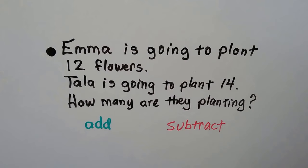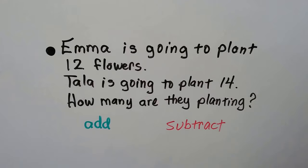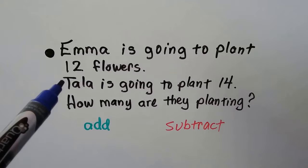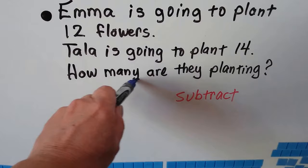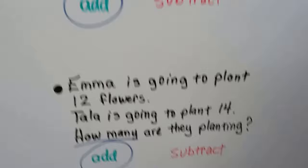Emma is going to plant 12 flowers. Tala is going to plant 14. How many are they planting? It's important to note: Emma is planting 12 and Tala is planting 14, but is this adding or subtracting? It doesn't ask how many more Tala is planting than Emma — it says 'how many are they planting?' So 'how many' is telling us to add. We need to add Emma's and Tala's together to find out how much they're planting in all. That's addition.